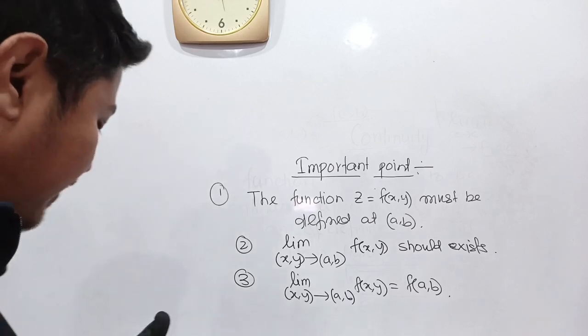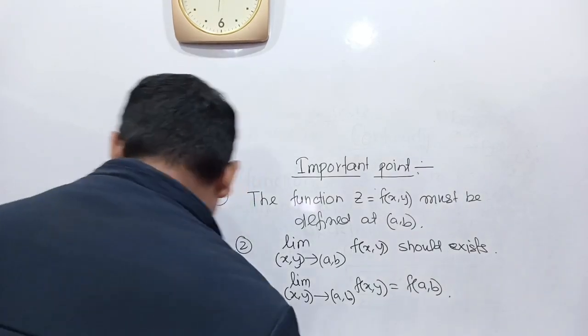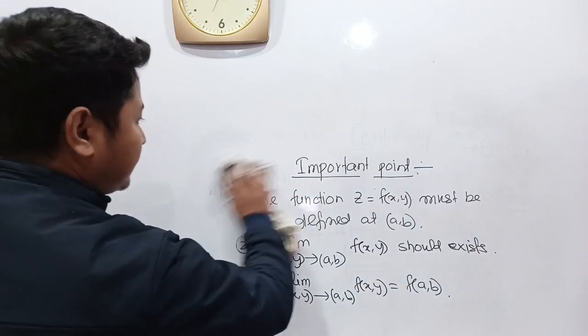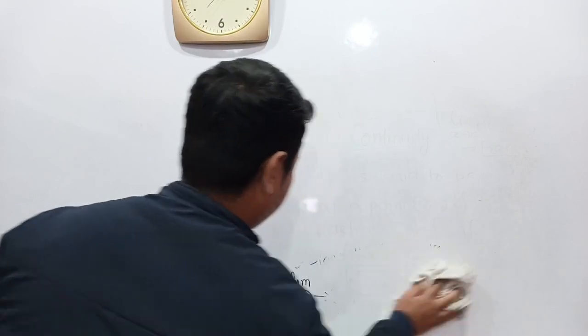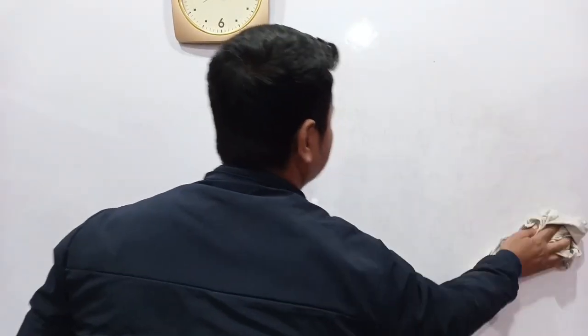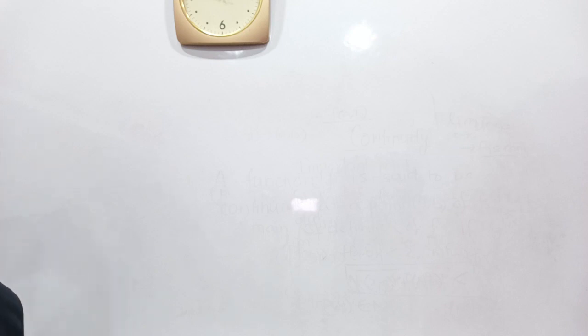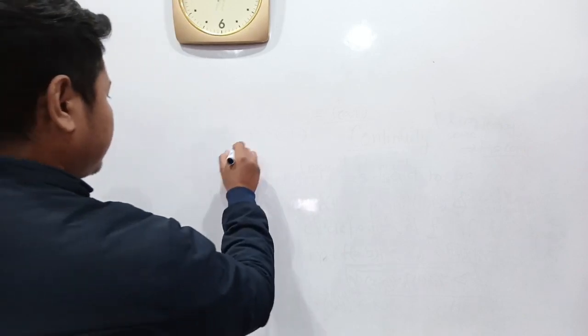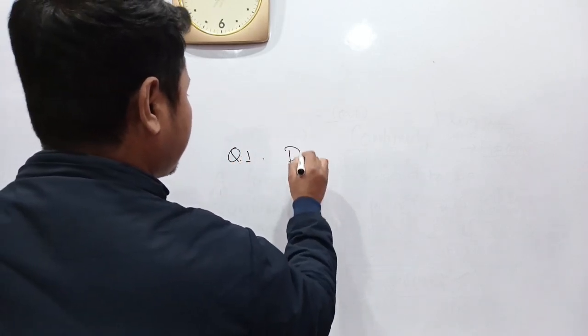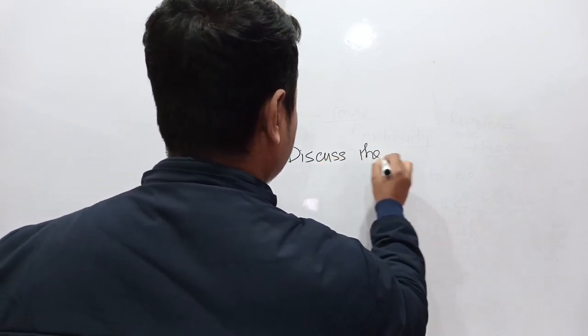Now let's do one problem related to continuity of a function of two variables. Let's start with the first problem. Discuss the continuity of the function — question number one.